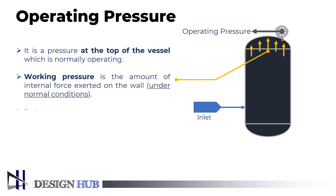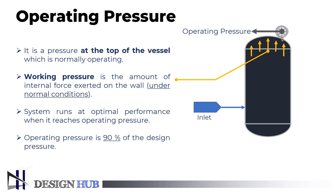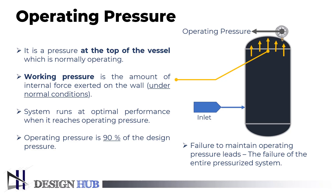When the system reaches operating pressure, it usually runs at optimal performance. Operating pressure is 90% of the design pressure, because it is determined by the type of process required in the plant. Failure to maintain operating pressure can cause the entire pressurization system to fail.